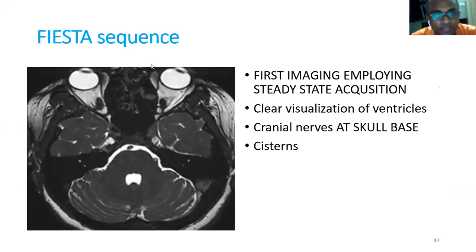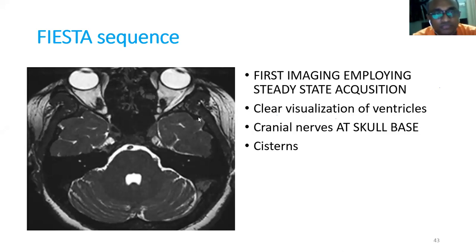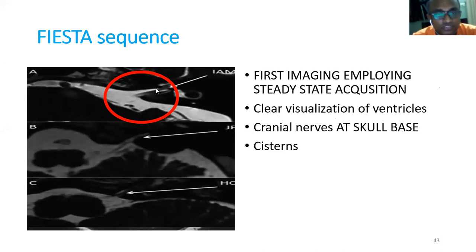Another sequence is called FIESTA (Fast Imaging Employing Steady-State Acquisition). It is mostly used for cranial nerves and seeing the cisterns. It provides clear visualization of the ventricles and cisterns. In different companies it is called VISTA sequence or CISS sequence. When you need to visualize cranial nerves, you ask for one of these equivalent sequences.